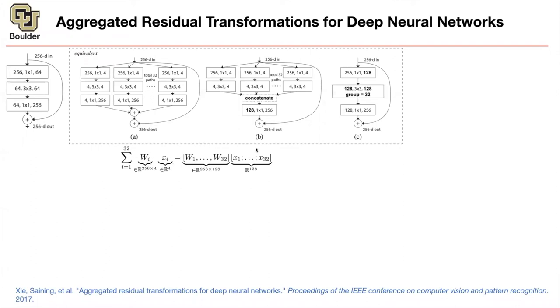So A and B are equivalent. It is clear. Do you have any questions? So A and B are equivalent because of this equality. B and C are equivalent because of a definition of group convolutions. So that's just a definition. So ResNeXt is going to use group convolutions.